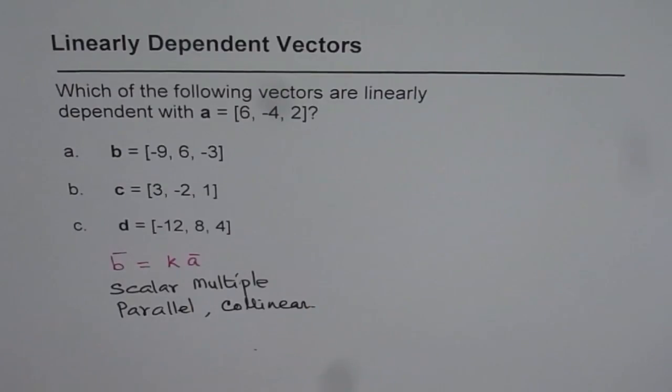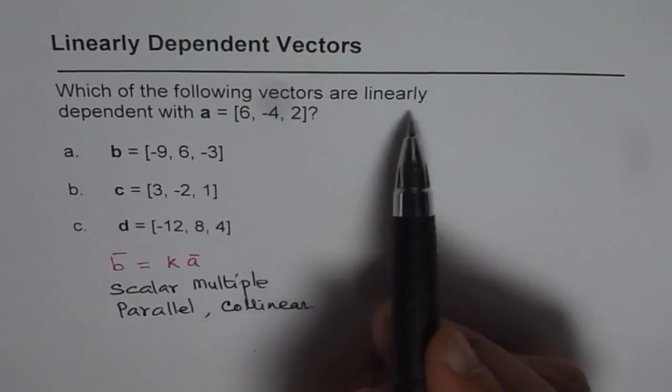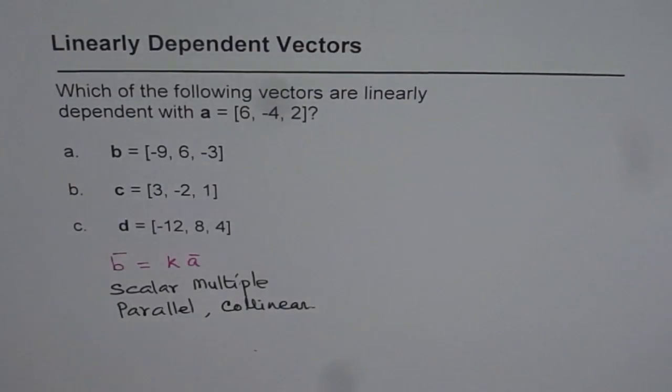So these are the other terms which could have been used instead of linearly dependent. A linearly dependent vector is one which is a scalar multiple, which is parallel and which is collinear, right? So that is how we have to see it. Now let us solve for it.